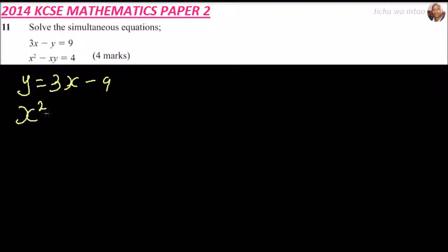We can substitute y in the second equation. So we have x squared minus x times (3x minus 9) equals 4.